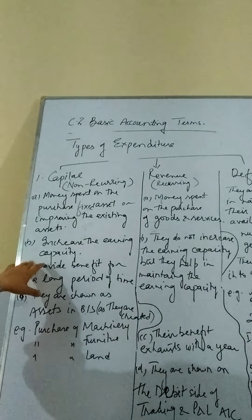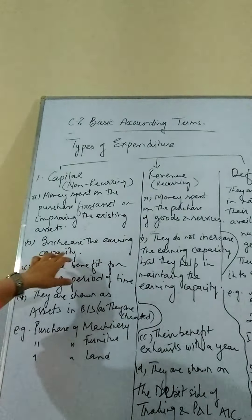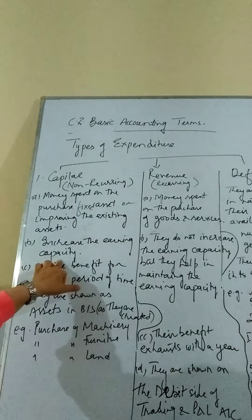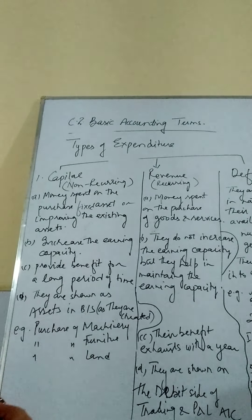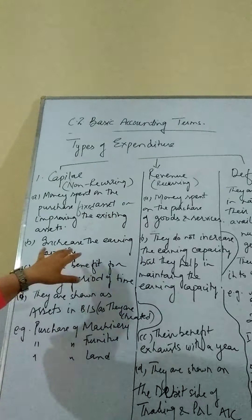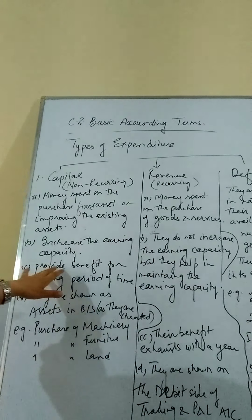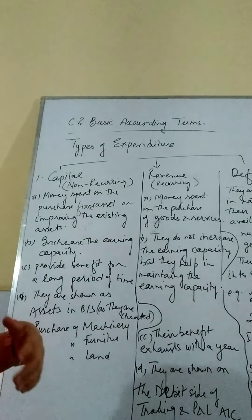The second feature is that these expenditures increase the earning capacity of the business. The earning capacity increases because of the increase in scale of operation. For example, if you had one machine, naturally less work is done. If you have five machines, more goods can be produced. So capital expenditures increase the earning capacity of the business.